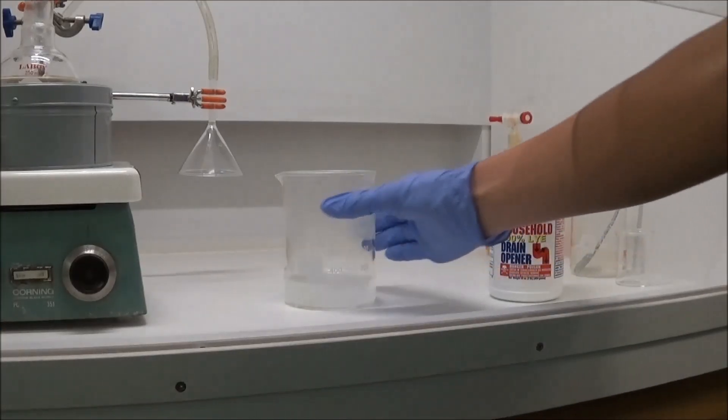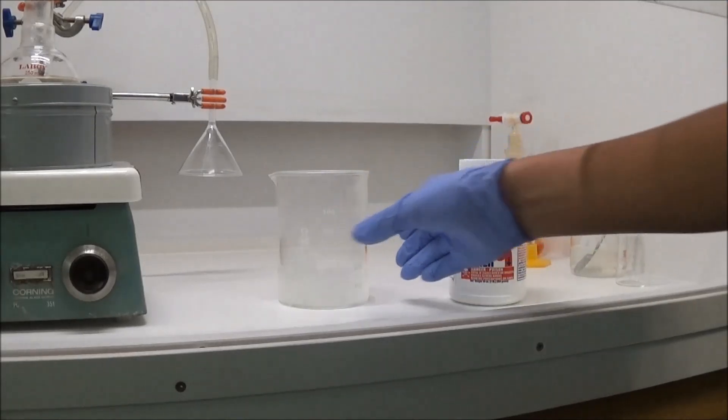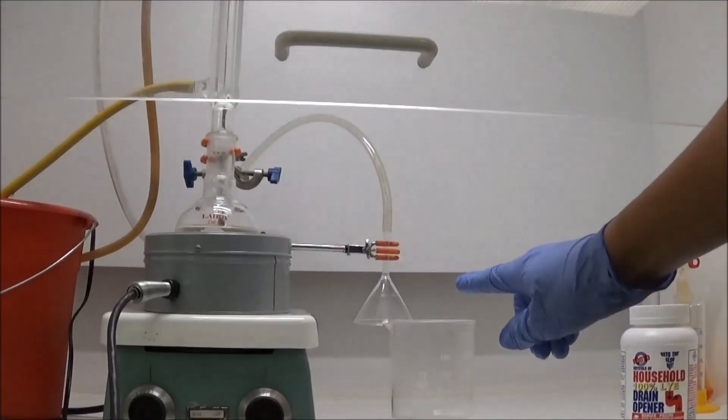Before I start heating, I dissolved a large amount of sodium hydroxide in water, and I set up a tube leading from the top of the condenser into this inverted funnel.